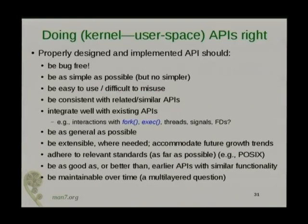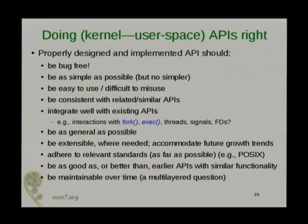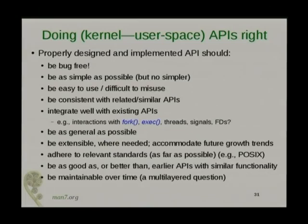So what does it mean to get an API right? These are some of the things I think of: no bugs, make it simple, make it easy to use, make it consistent with other similar APIs that already exist. It should integrate well with existing features of the kernel API — how does it behave with respect to fork, exec, threads, signals, file descriptors? It should be as general as possible, extensible where that makes sense, adhere to standards if relevant, be better than what came before, and be maintainable over time. That last idea is quite interesting, and I have an interesting example of an interface that isn't maintainable over time.